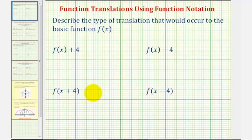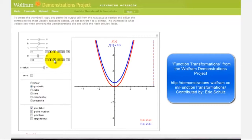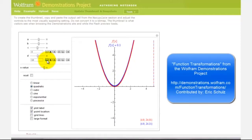Let's look at an animation to illustrate these translations. Let's start by looking at what happens when we add or subtract a constant from f of x, the function value. Notice as we add a constant, the graph is shifted up. And if we subtract a constant from f of x, we can see the graph is shifted down.